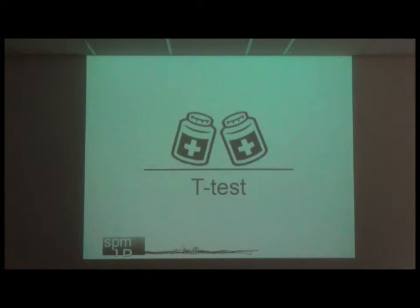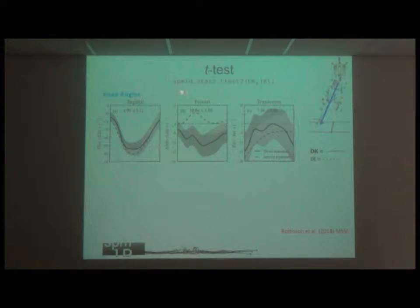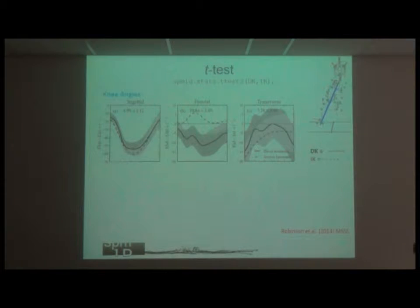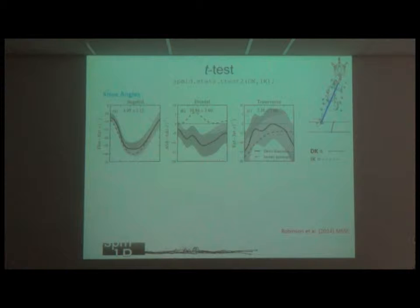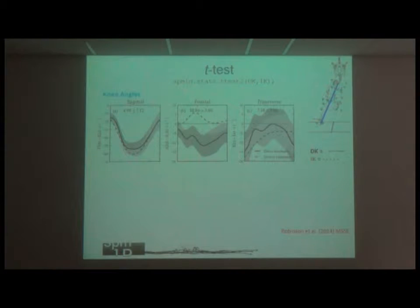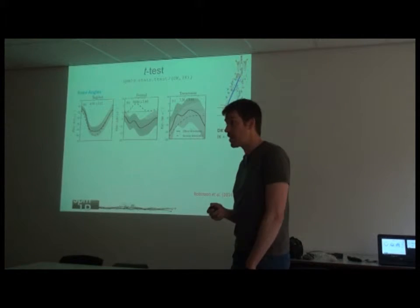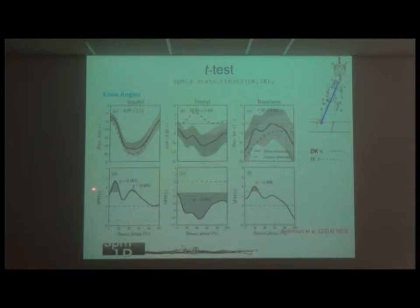A t-test is a single function you call on your data. In this example, we have knee kinematics in three planes. For each plane we processed the same data in two ways: a direct kinematic way and an inverse kinematic way. Here are the outputs — two different curves each time — the direct kinematics as the full line and the inverse kinematics as the dashed line. With SPM, you simply calculate the t-curve and place it underneath, then calculate your thresholds based on random field theory.